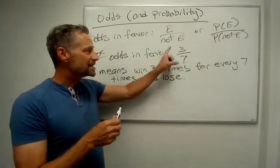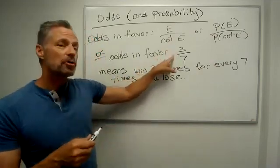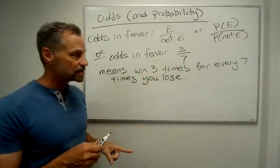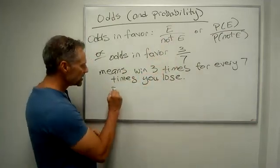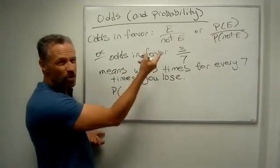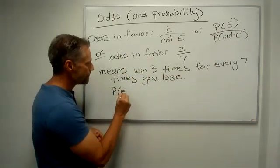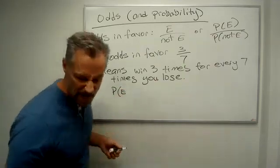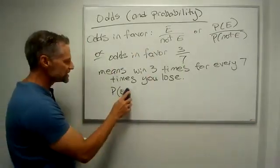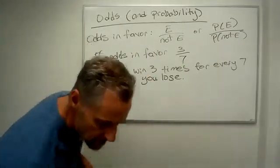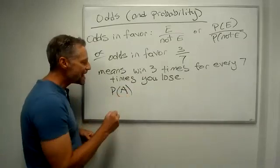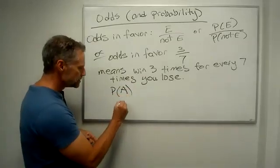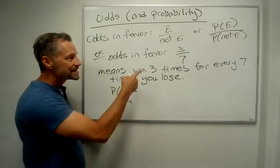Now if we want to calculate the probability from this, let's call this event A. We're already using E up there, I don't want to make this confusing. The probability of A, that you're going to win, is going to be... well, we win three times,